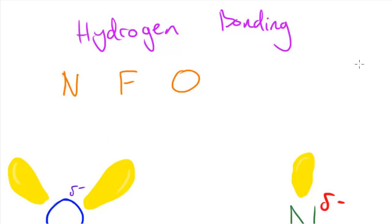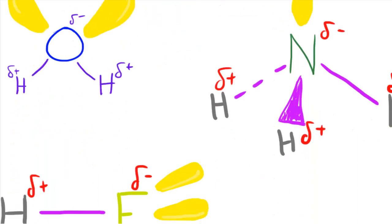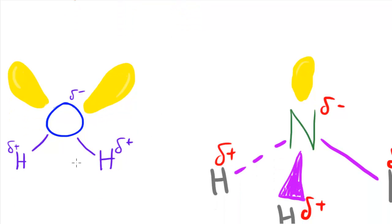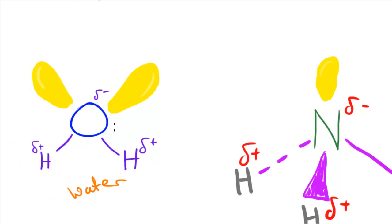If we take a look at these molecules — starting with this water molecule — what happens is this slightly positive hydrogen here, since the oxygen is so electronegative, it's really being greedy with the electrons it's meant to be sharing. The hydrogen becomes so positively charged that it almost comes close to forming a dative covalent bond.